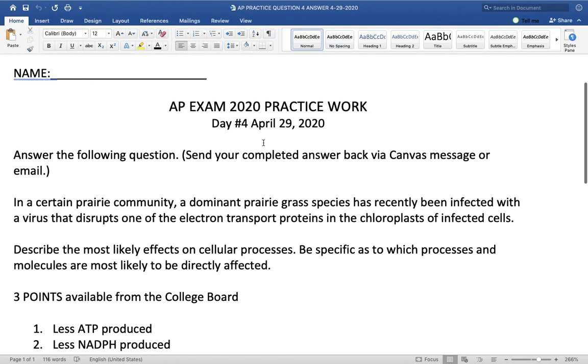At the same time, you would not make as much NADPH because that involves an electron transport chain also. In the light reactions, that Z scheme, light reactions that we went through first semester. And remember, ATP is energy. NADPH is going to be an electron carrier into the Calvin cycle.